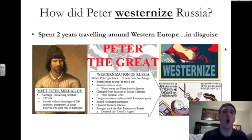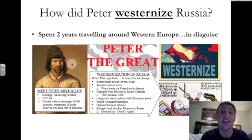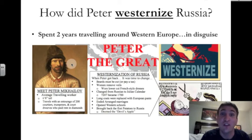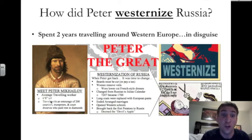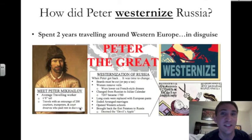How did Peter the Great westernize Russia — meaning make it more like Western Europe? He did it using a road trip. He spent two years traveling around Western Europe in disguise. Here is a painting of Peter's disguise: he changed his name, keeping Peter but using Mikhailov as his last name. He traveled with an entourage of 200 courtiers, trumpeters, and court dwarves. And how did they pay for rent in the various places they stayed? They used diamonds — no big deal, just diamonds.